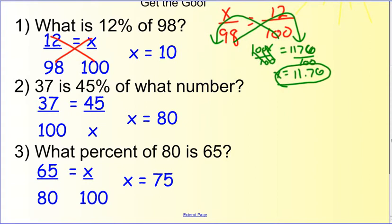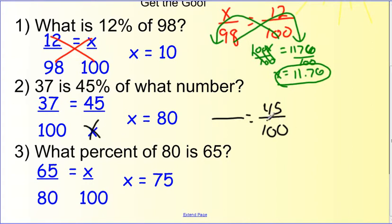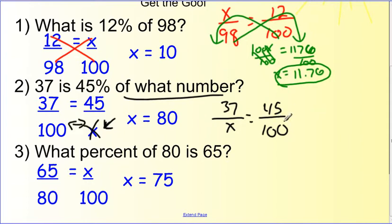Number two. Let's set up our proportion for the word problem. Percent — good. Over 100 — not good. That number should never be a variable. We always know it's out of 100. And then the 'of' number is our x. The other number is 37. So again, they got these two guys backwards, and that's enough to mess up the problem completely.